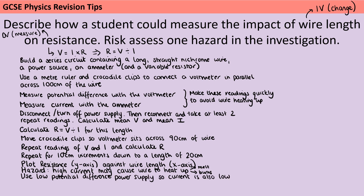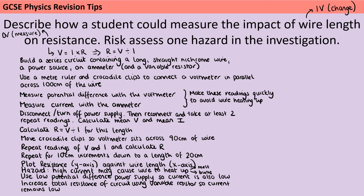One thing you could talk about is using a really low potential difference power supply, because if the potential difference is low enough, then the current will be low as well. You can also talk about using a variable resistor to increase the resistance of the circuit. As your wire gets shorter and shorter, you use the variable resistor to add back the resistance you're taking away, so the resistance of the whole circuit isn't changing. That means the current stays the same and therefore it doesn't get too hot.